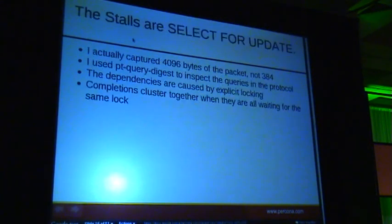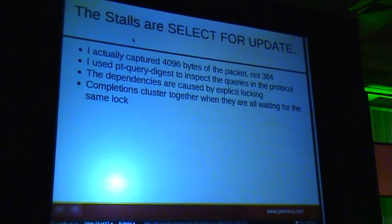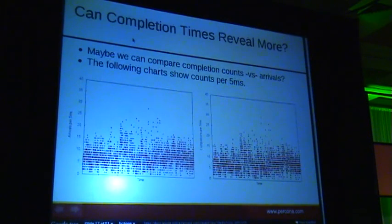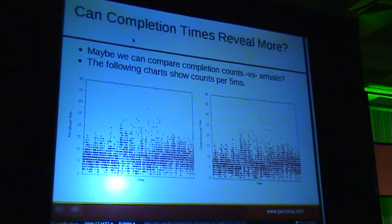This is indeed a select for update. They've got a queue in their database — they're treating the table as a queue of jobs to be processed. There's a process that goes through and claims things with select for update. This comes from Ruby on Rails — there's a dot lock operation with the active record, and that ends up as a select for update. The stalls are verified through the rest of the packet. If select for update causes dependencies based on completions of queries, then maybe we can look at something else with completions — or compare completions and arrivals — and see some other interesting things coming out of the system.